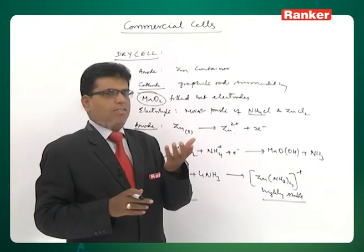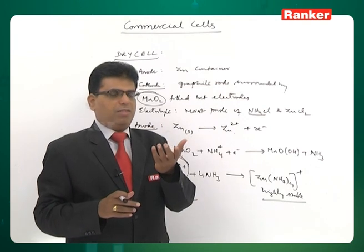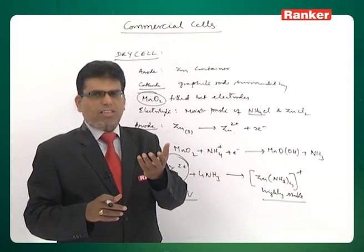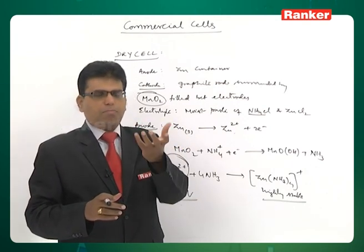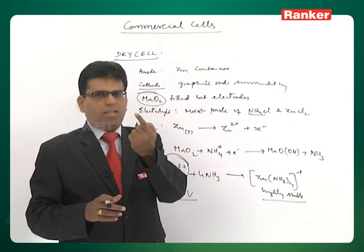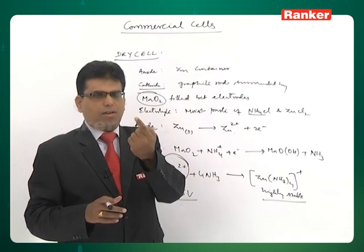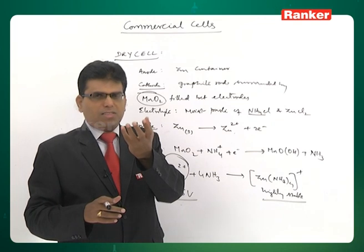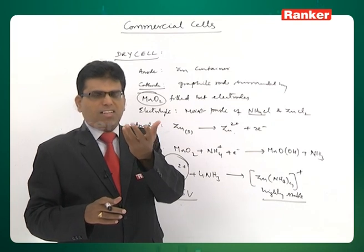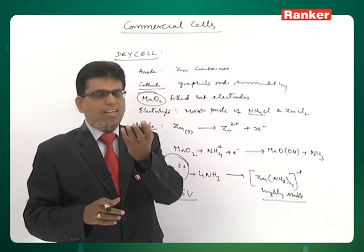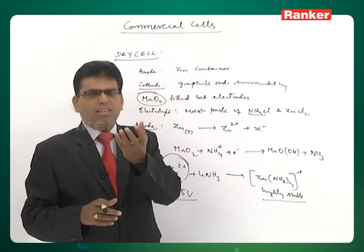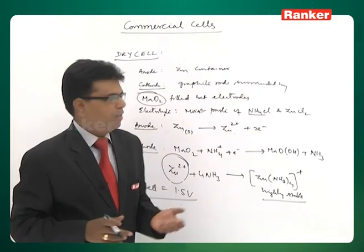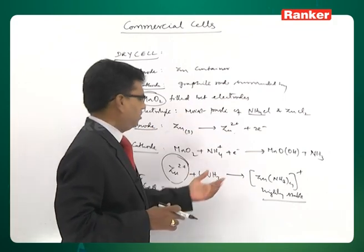If you break open a used battery, a black powder comes out — that is manganese dioxide powder — and you can also see the graphite rod. The gray-colored vessel is the zinc container, and the black powder is the manganese dioxide. These are the cell components and reactions of the dry cell.